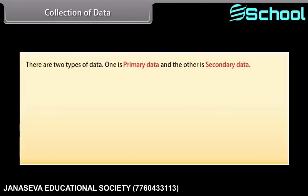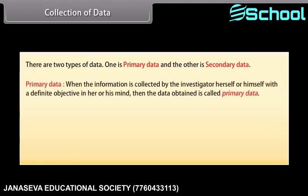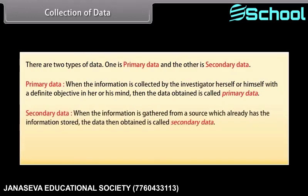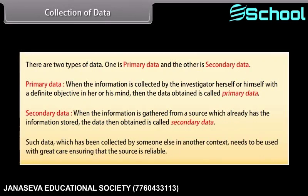There are two types of data: primary data and secondary data. Primary data is when the information is collected by the investigator herself or himself with a definite objective in mind. Secondary data is when the information is gathered from a source which already has the information stored. Such data which has been collected by someone else in another context needs to be used with great care, ensuring that the source is reliable.